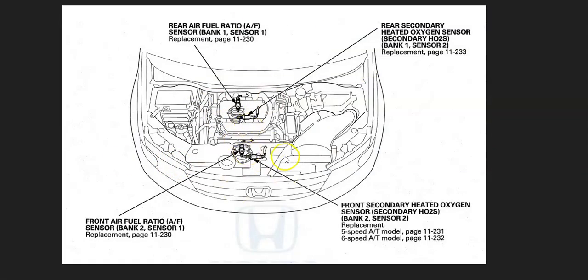The first thing to do when you get this code is to locate all the oxygen sensors on your particular Honda since there can be some differences. For example, here's a 2012 Honda Odyssey and you can see where all the oxygen sensors are laid out. Sometimes there'll only be two, sometimes there'll be four.